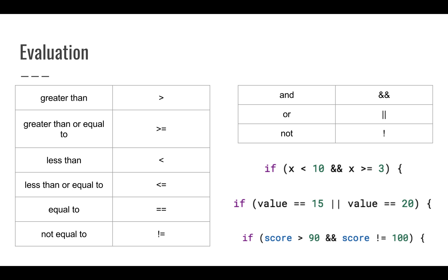When we evaluate, we have a few symbols we use: greater than, greater than or equal to, less than, less than or equal to, equal to which uses a double equal sign, and not equal to which is an exclamation point followed by an equal sign. We also have combinations — we can use 'and', 'or', and 'not' to combine evaluations. For example, if X is less than 10 and X is greater than or equal to 3, that means X is 3 through 9. If value equals 15 or value equals 20, we execute the if statement for either case. And if score is greater than 90 and score is not equal to 100, we execute in that situation.